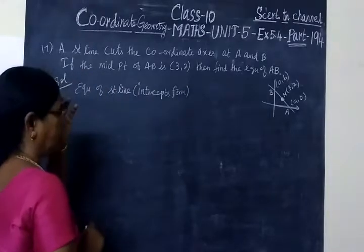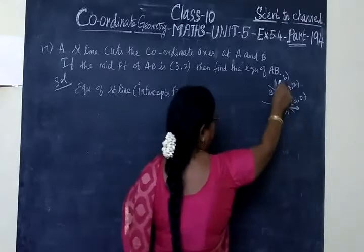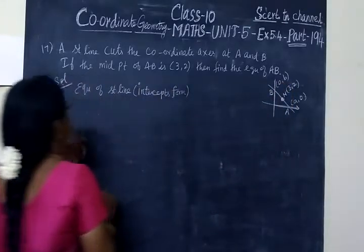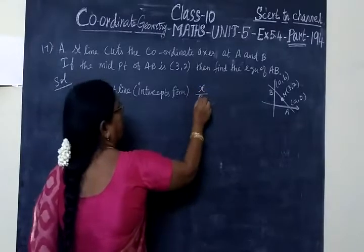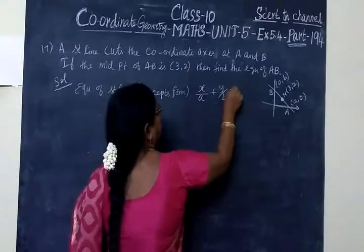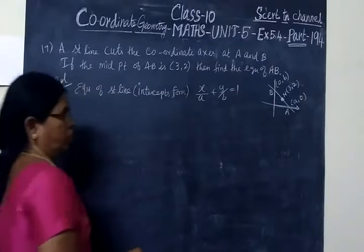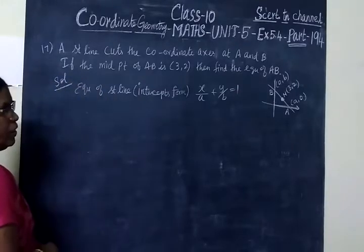So we are using the midpoint formula and we are finding A and B. The equation of straight line intercept form is X/A plus Y/B equal to 1. Now we want to find the value of A and B.